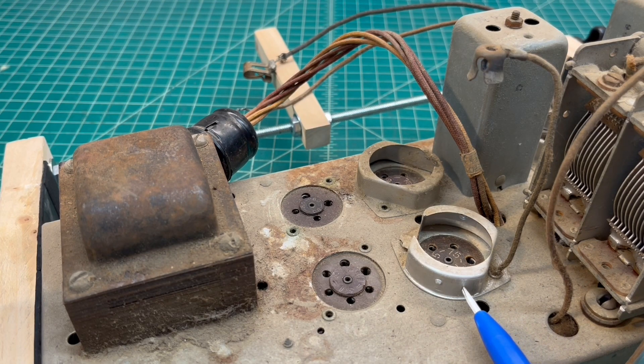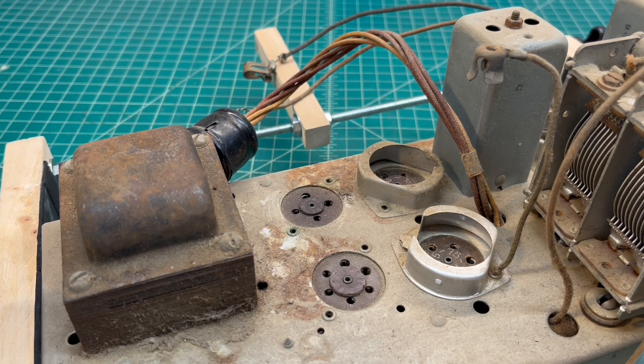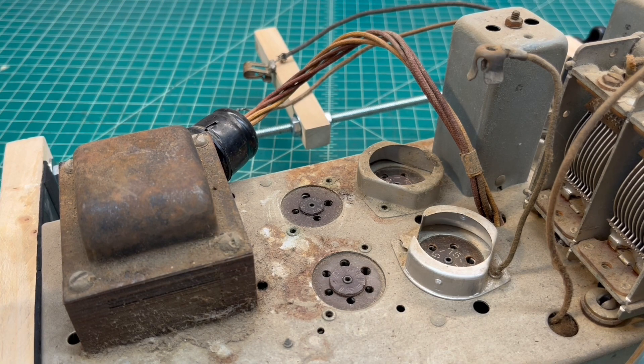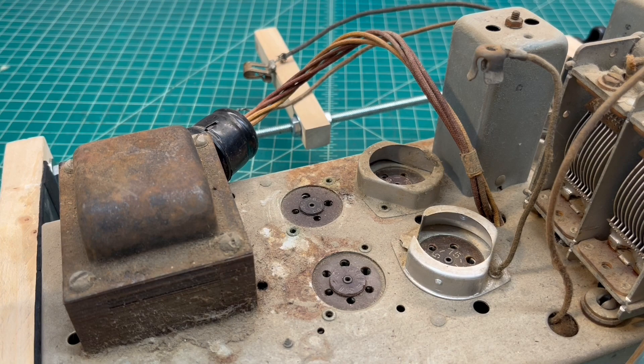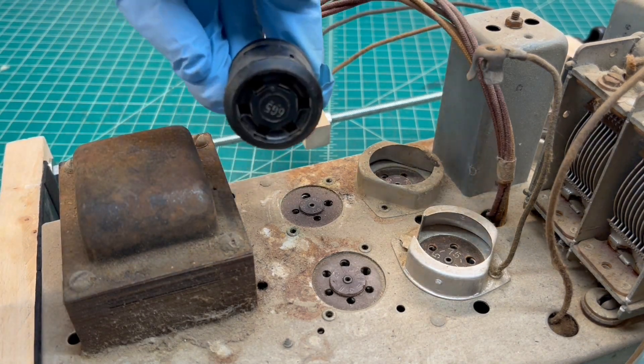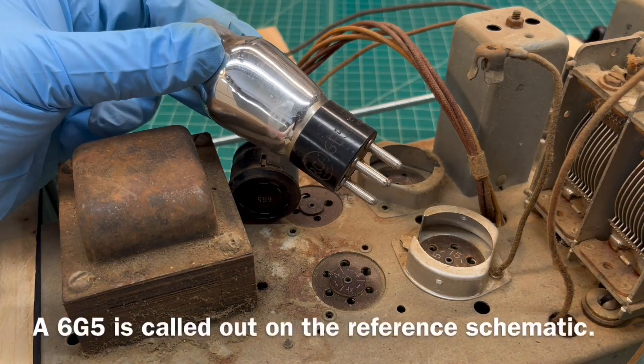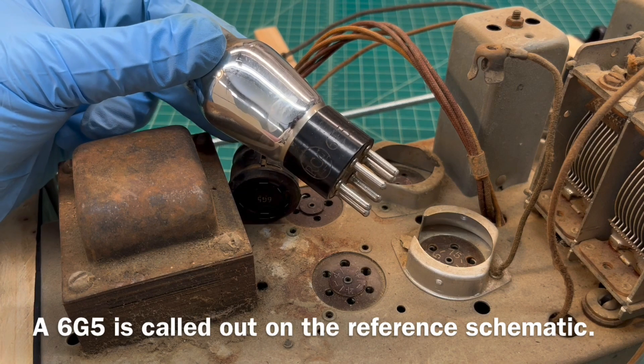So we've got the 75, 76, and you see they actually have tube shields on those to minimize any oscillations. Let me flip this around and we'll look at the two remaining tubes - or actually there's three if you count the green eye, or what they refer to as the electric tube. You can see a 6E5 was used as the green eye tube.